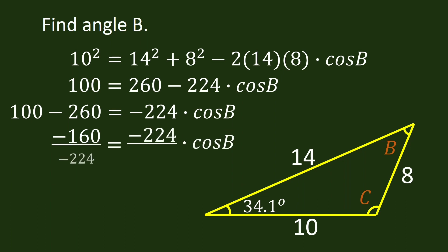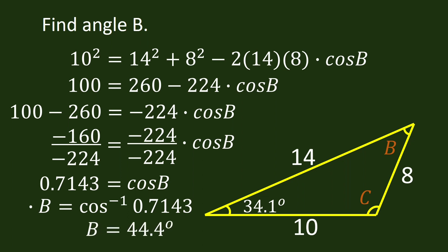Divide both sides by negative 224. We have 0.7143 is equal to cosine B. B is equal to inverse cosine 0.7143. Finally, B is equal to 44.4 degrees.